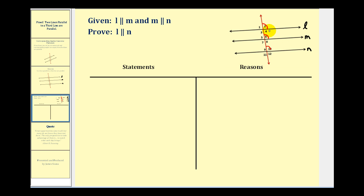And therefore, by the transitive property, it follows that angle two is congruent to angle ten. And therefore, L is parallel to N. So let's go ahead and write this out.